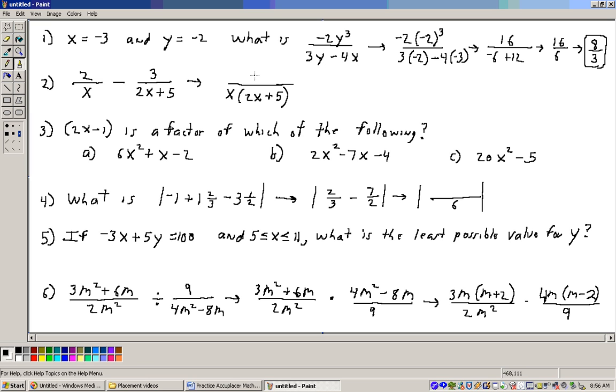Well, I substituted in the negative 2 for the y right here, and I'll put parentheses around it, so it'll be negative 2 times the quantity negative 2, and that gets cubed. That's over 3 times y, y is negative 2, so that'll be 3 times negative 2 minus 4 times x, and x is negative 3.